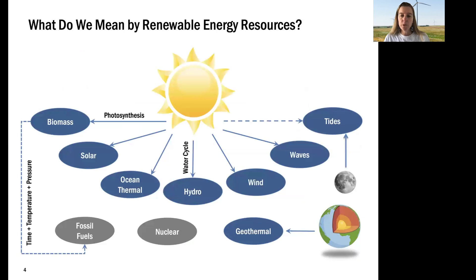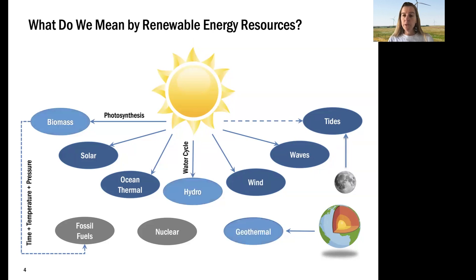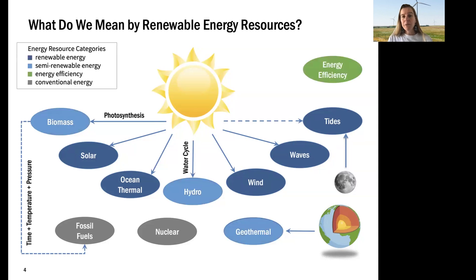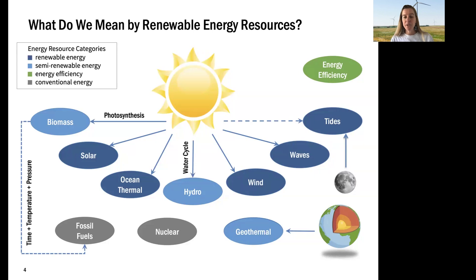What do we mean by renewable resources? Many of our renewable resources are powered ultimately by the sun — that's our fusion reactor in the sky — with a few exceptions like geothermal, powered by the heat in our earth, and tides, powered by the moon. Energy efficiency, which we consider the most renewable resource, is really powered by human ingenuity. Biomass can be thought of as a pre-fossil fuel — one that hasn't been crushed through time, temperature, and pressure — but again it's ultimately powered by the sun.